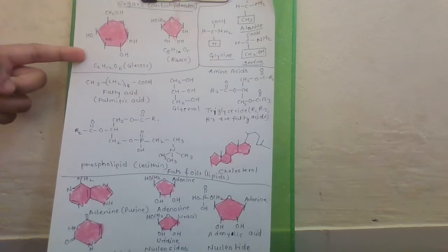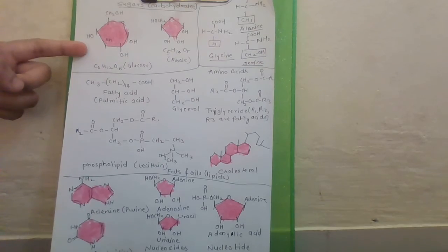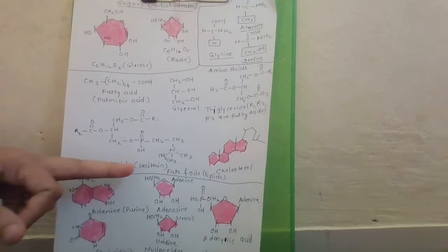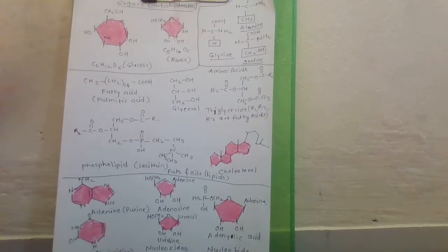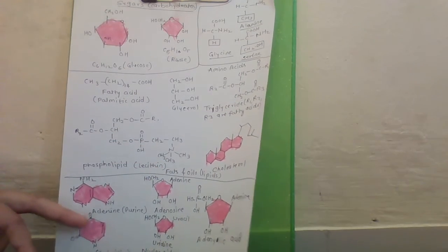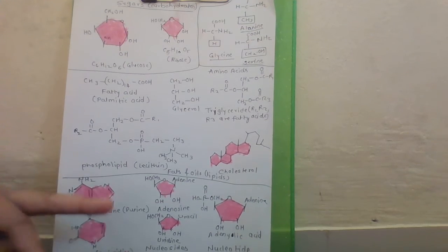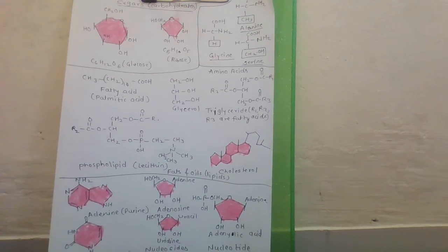In brief, we discussed sugars or carbohydrates, amino acids, fats and oils or combinedly called lipids, and nitrogen bases—nucleosides and nucleotides.